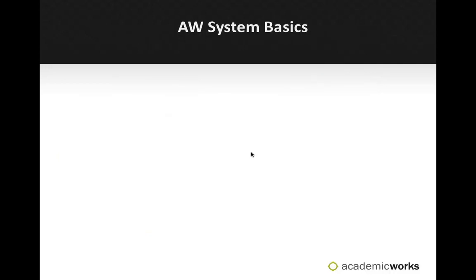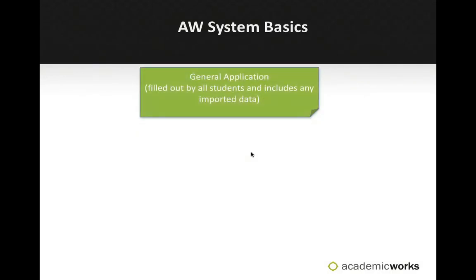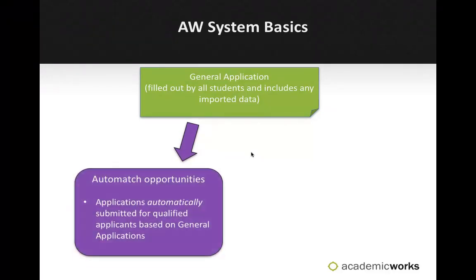Let's talk about some of the system basics. How do applicants actually complete an application for scholarships? In your basic system, the first time an applicant logs in, they'll land on the general application. The general application is filled out by the students and would also include any of that imported data that you're sending over to Academic Works. Once they submit that general application, the system will begin to automatically match those applicants to scholarships they meet the qualifications for, based on the general application answers and that imported data. This all happens behind the scenes and applicants don't have to take any further steps to match to those auto-match opportunities.